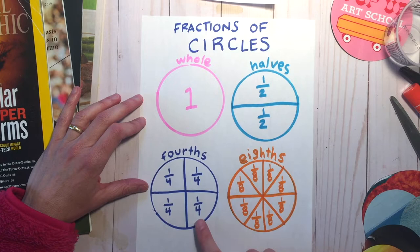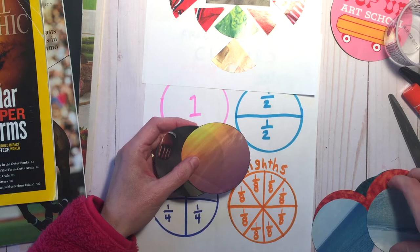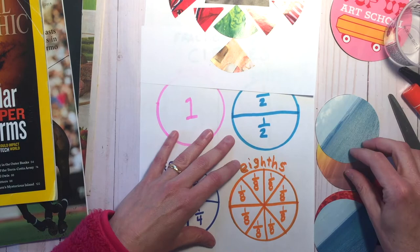We've got halves, a whole, fourths, and eighths. This is all in a circle. Using those we can make the designs. So each of these circles I've made from some magazines I had lying around the house.